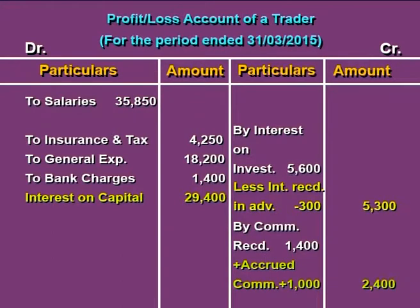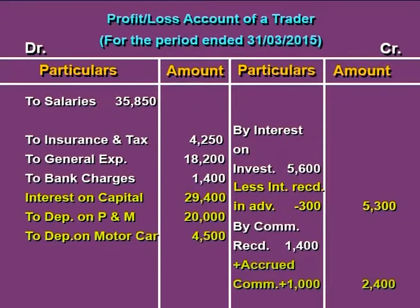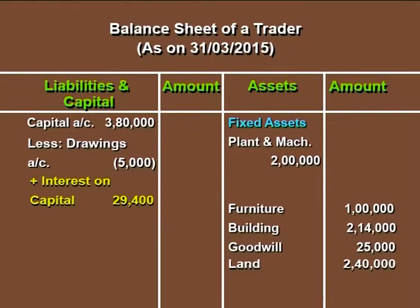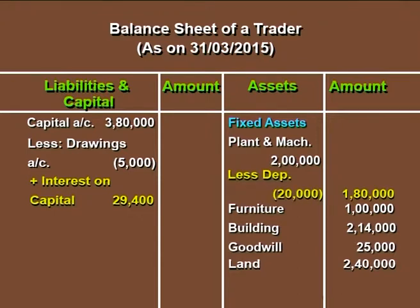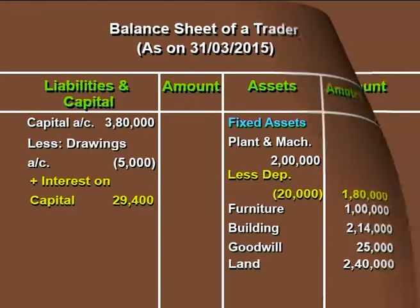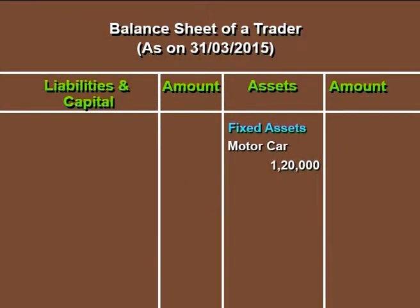Both depreciation amounts are reported on the debit side of the profit or loss account as the first effect. The second effect: depreciation is deducted from the concerned assets in the balance sheet. Plant and machinery of Rs 2,00,000 in the inner column is reduced by Rs 20,000 depreciation. Motor car of Rs 1,20,000 in the inner column is reduced by Rs 4,500 depreciation.